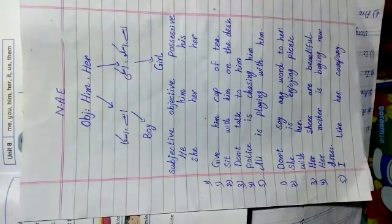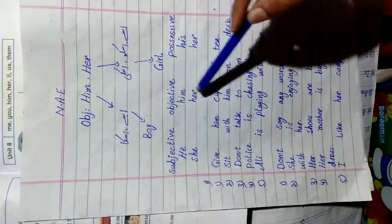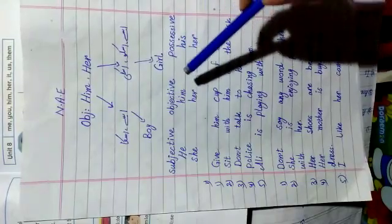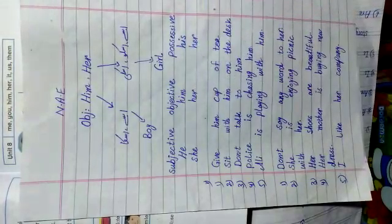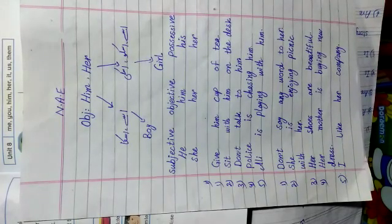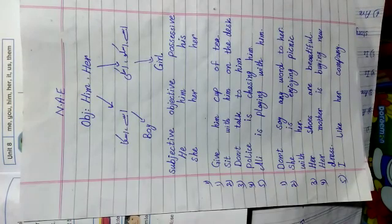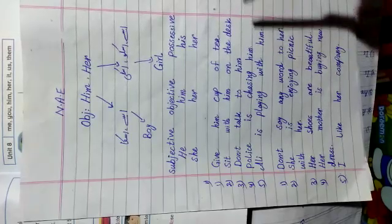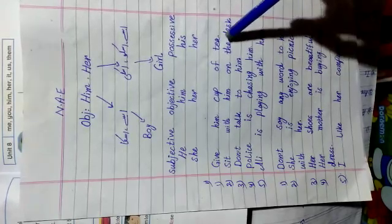Him we use for a boy and her we use for a girl. When we use 'him' in a sentence, we cannot use it at the start of the sentence — we always use 'him' in the middle or at the end of the sentence, because we always use him as an objective case. Here are some examples about 'him'.